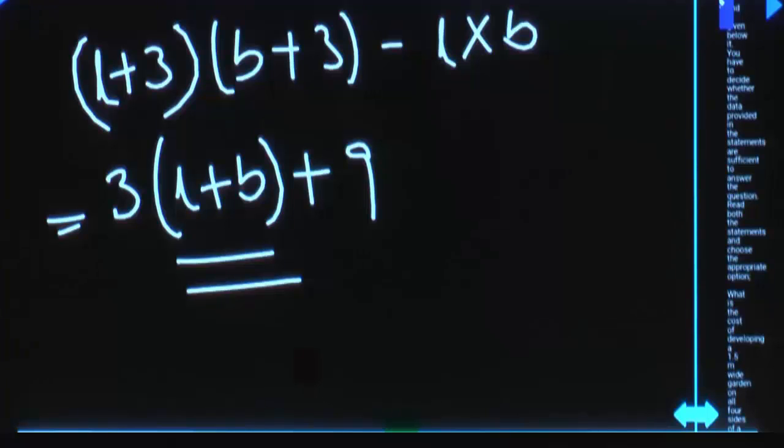Now if you know L plus B value, we can calculate 3 into L plus B plus 9, which is itself the path area. Hence using L plus B alone we will get the answer. Need not separately know what is the L value or what is the B value.